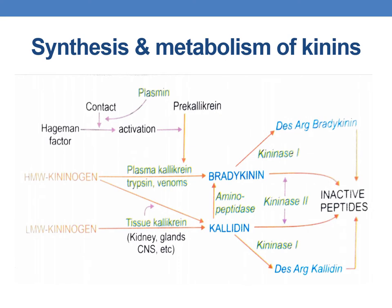Coming to the synthesis and metabolism of kinins: kininogens are alpha globulins present in plasma and also contain inactive kininogenase called pre-callicrin. This pre-callicrin is activated by Hageman's factor, which is factor 12. Hageman's factor in turn is activated by tissue injury and contact with surfaces having negative charge, for example collagen, basement membrane, bacterial lipopolysaccharides, urate crystals, etc. Additionally, plasmin facilitates the contact activation of Hageman's factor.